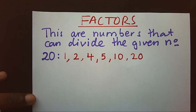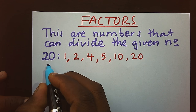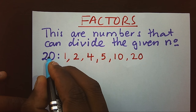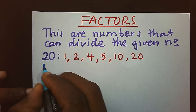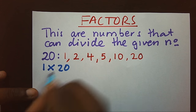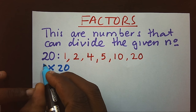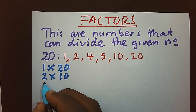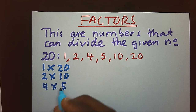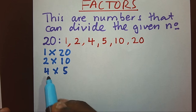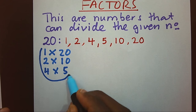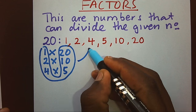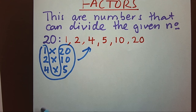How do we easily obtain these numbers? We can look at pairs of numbers which multiply to give the given number. For example, 1 times 20 gives 20. 2 times 10 gives 20. 3, no. 4 times 5 gives 20. After doing that, you can take all of them and list them. This is an easier way of how we can find our factors.